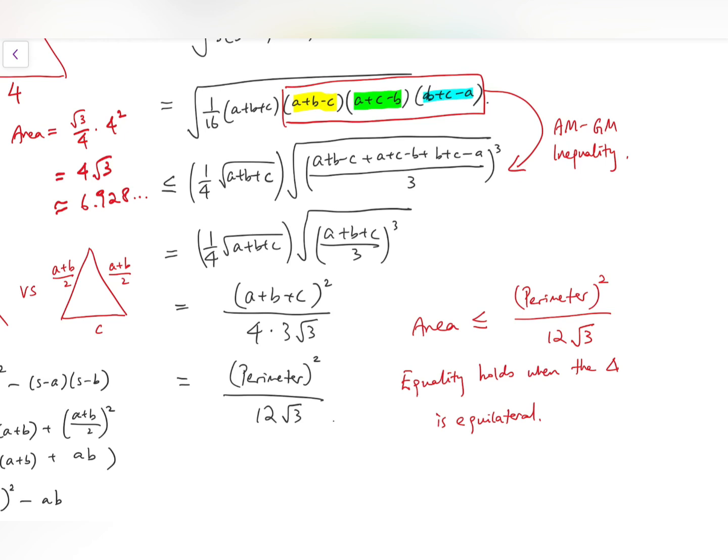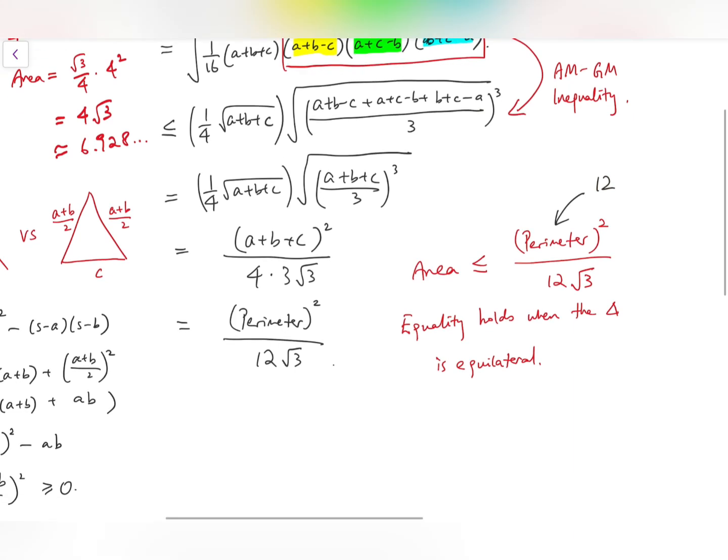And from this inequality, we know that we can't have area and perimeter both equal to 12, because for perimeter equal to 12, you can easily calculate that the area is indeed less than or equal to 4 root 3. So it is really impossible. Thank you.